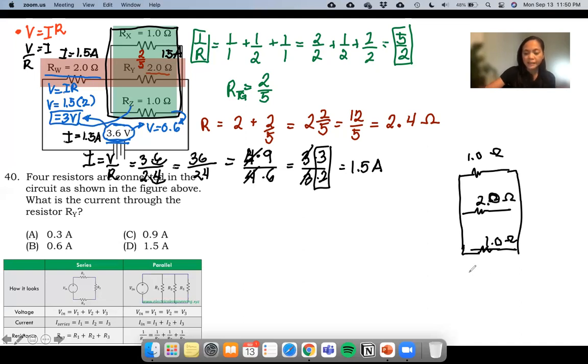This has a voltage that is 0.6, a total voltage, and a total current of 1.5 amperes.